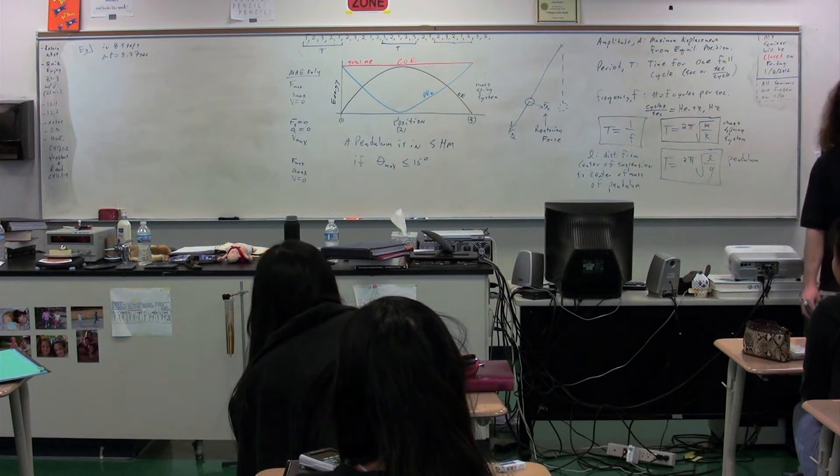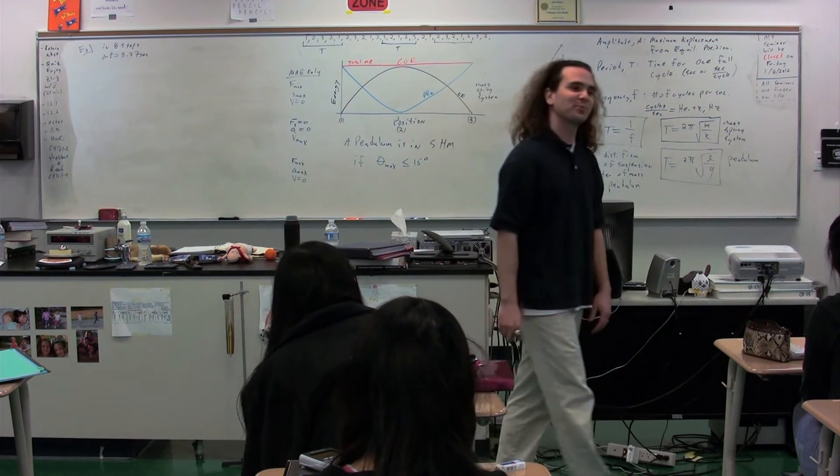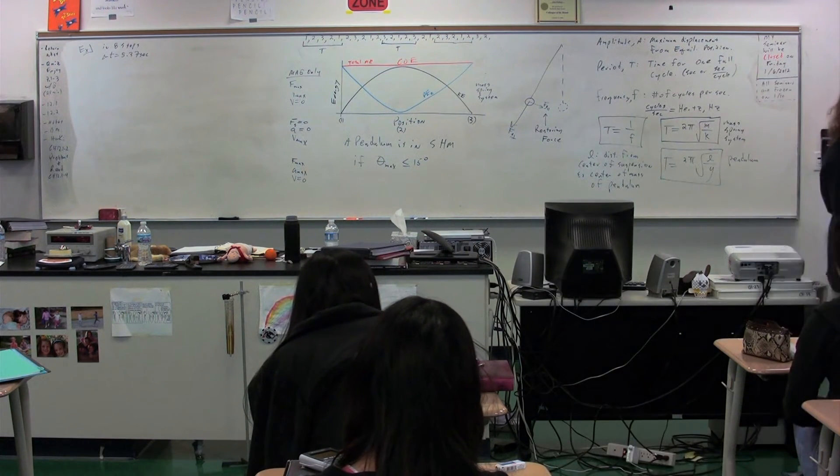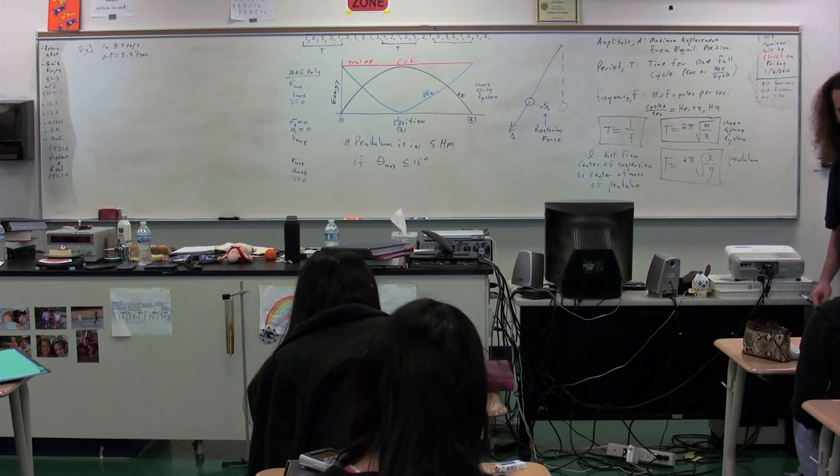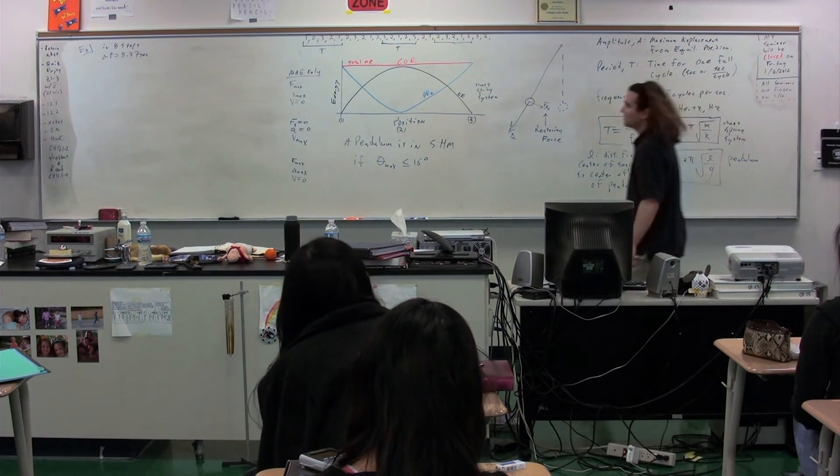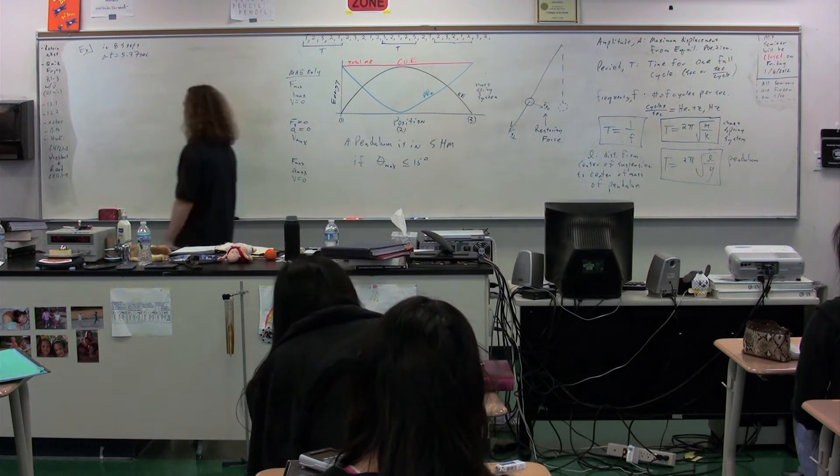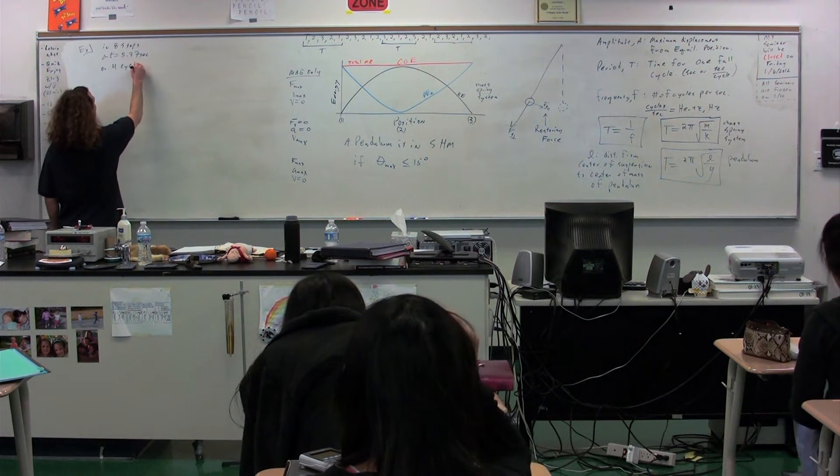How many cycles of the pendulum in eight steps? How many? Four. Notice that every step is half a cycle, right? They go from one to two to three. That's half a cycle. So, in eight steps, the change in time was 5.37 seconds, so that was four cycles of the pendulum.